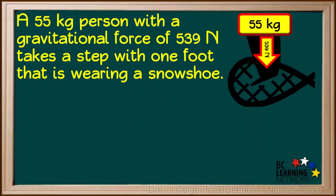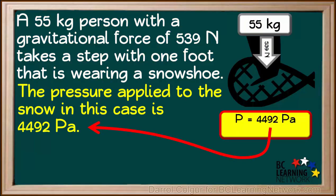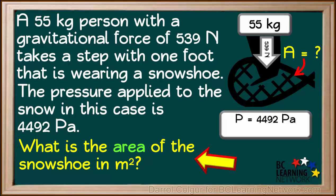In this problem, we'll consider the same 55 kilogram person with a gravitational force of 539 Newtons taking a step with one foot on a snowshoe this time instead of a boot. The pressure applied to the snow during this step is found to be 4492 Pascals, considerably less than the 19,250 Pascals applied by the boot. A snowshoe applies less pressure for the same force of gravity because the force is distributed over a larger area than the sole of a boot.